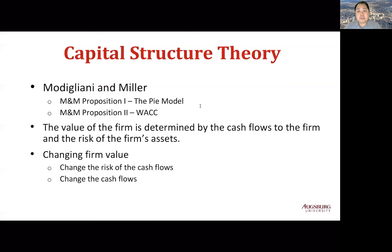MM1 is about firm value itself, sometimes called the pie model, and MM2 is about the cost of capital. We already know that a firm should choose a capital structure that maximizes firm value and minimizes the cost of capital. Using these two factors related to cash flows and risk, they try to find the relation between capital structure and firm value with three cases.